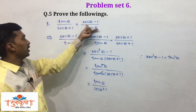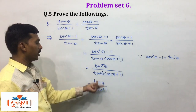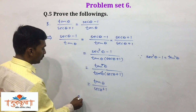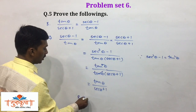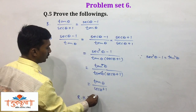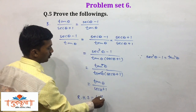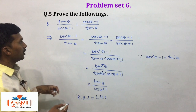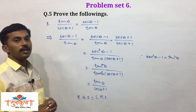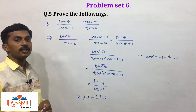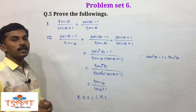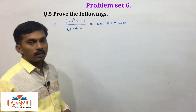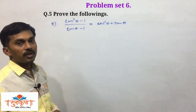Now, sec squared theta minus 1 equals tan squared theta — it is an identity. So we write tan squared theta upon tan theta times (sec theta plus 1). The tan squared theta and tan theta cancel, leaving tan theta upon (sec theta plus 1), which is LHS. So RHS equals LHS. This is all about example number 8.